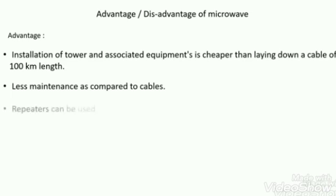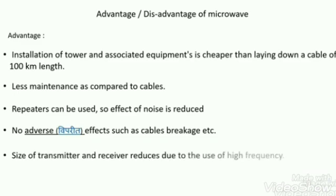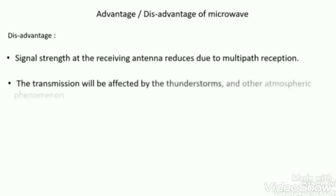Advantages of microwave transmission: it is cheaper than using cables because it does not require installation of cables, reducing cost. Microwave needs less maintenance compared to cables. Repeaters improve signal quality and reduce noise. No cable breakage issues exist. Transmitter and receiver sizes are very small, supporting high frequency. Disadvantages include low bandwidth, signals can be affected by environmental changes such as rain, wind, and thunderstorms, and some signals require permission to access.